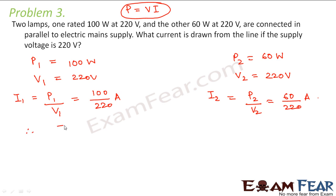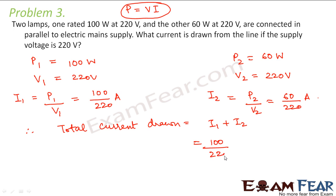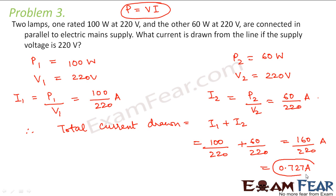Therefore, total current drawn by these two bulbs will be equal to I1 plus I2. So total current is 100 by 220 plus 60 by 220, that is equal to 160 by 220 amperes. This comes out to be 0.727 amperes. So this much amount of current will be drawn from the line.